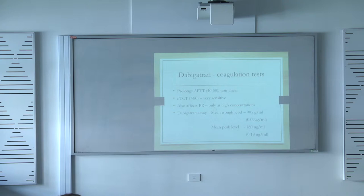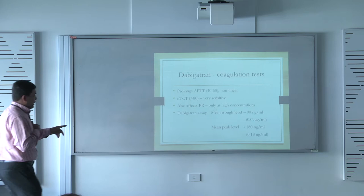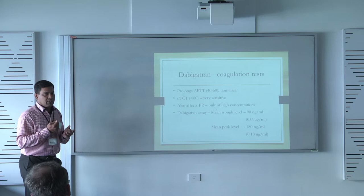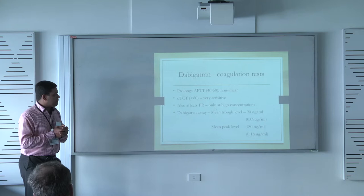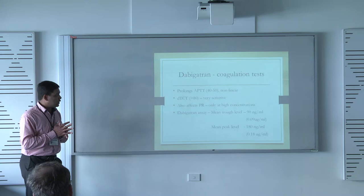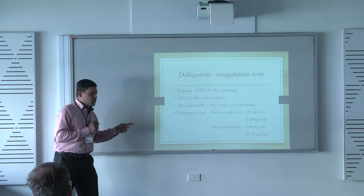One important thing about Dabigatran is that it affects the coagulation system and we can measure the Dabigatran level in the blood. It affects and prolongs APTT — not always, but most of the time. The effect is non-linear. The other test we use is dilute thrombin clotting time, or DTCT. Dilute TCT is very sensitive to Dabigatran. We add thrombin to the blood to make it clot, using dilute thrombin, which makes it very sensitive. Even a small amount of Dabigatran will prolong the dilute TCT. It also affects the prothrombin ratio, but only at very high concentrations — most of the time it's normal.